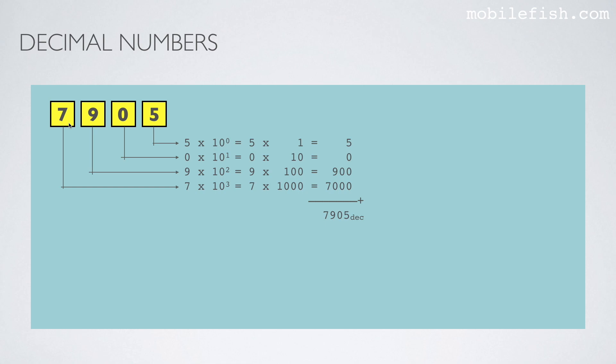We have here a decimal number, 7905. If you want to convert this decimal number into decimal number, which is a silly thing to do, but we can do the same what we have done earlier with the binary number. We write down values over here: 5, 0, 9, 7. Because a decimal number is a base 10 numeral system, we write the 10 over here. And these are the positions: 0, 1, 2, and 3.